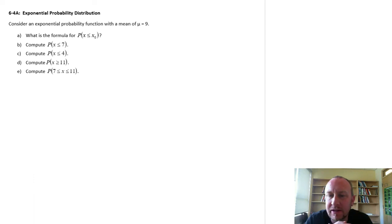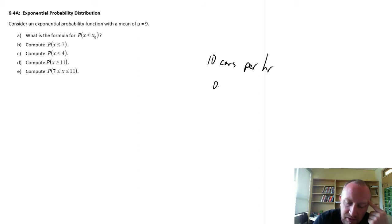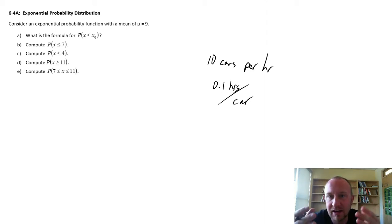The exponential probability function is the continuous version of that similar kind of thing. Instead of a Poisson variable like the number of cars, say 10 cars per hour, that would be discrete, whereas for the exponential probability distribution we're really just looking at the inverse of that. It would be 0.1 hours between cars, a tenth of an hour between cars, 10 cars per hour.